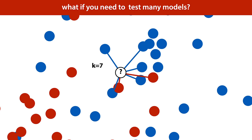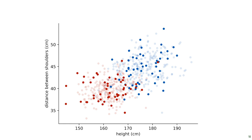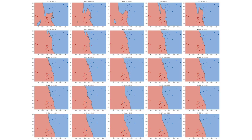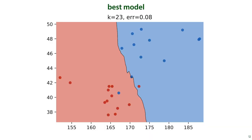But that's not the whole story, because sometimes you need to test many different models. For instance, you may want to test every single value of k between 1 and 29. To show what happens if you do that, let's subsample the data a little so the effects become exaggerated. Starting with k equals 1, we achieve an error on our test set of 0.12. For k equals 2, the error goes up a little, and we continue like that. Out of these 25 trials, the lowest error is achieved at k equals 23, where we achieve an error of 0.08.